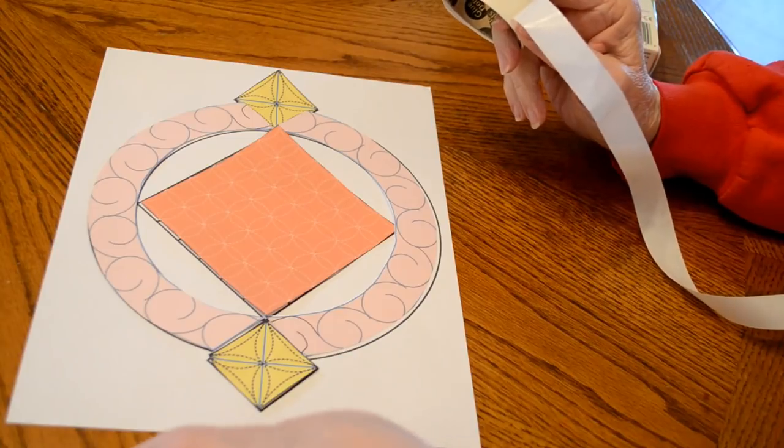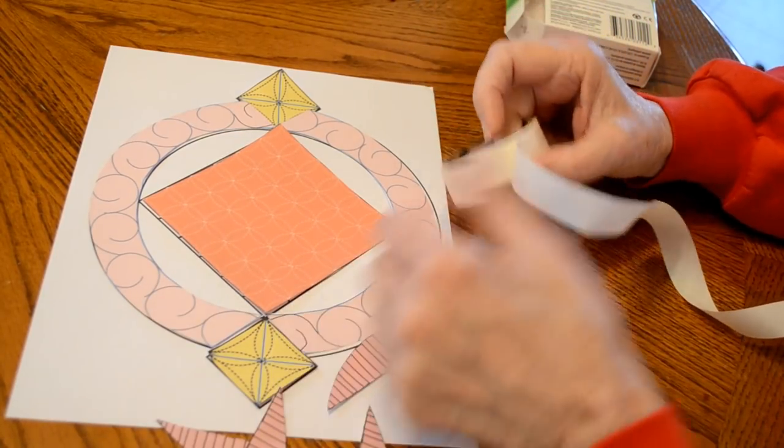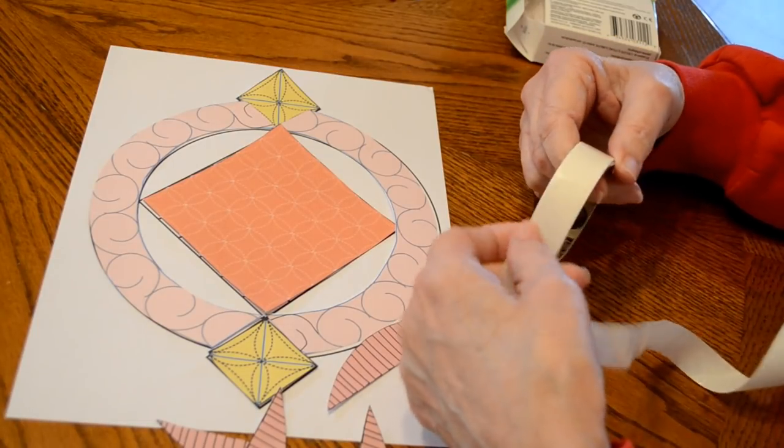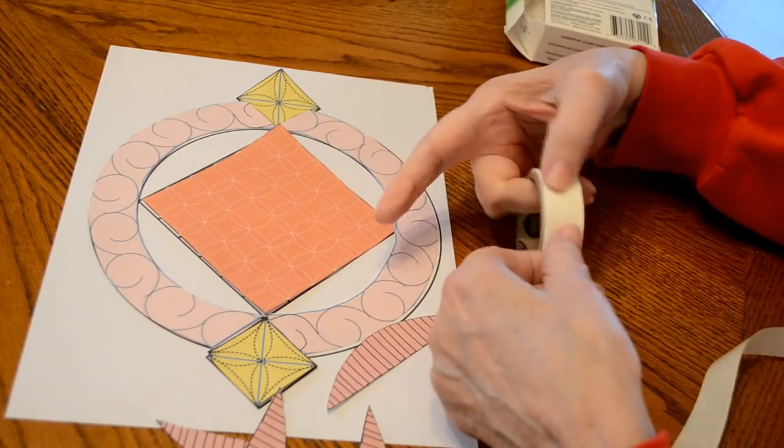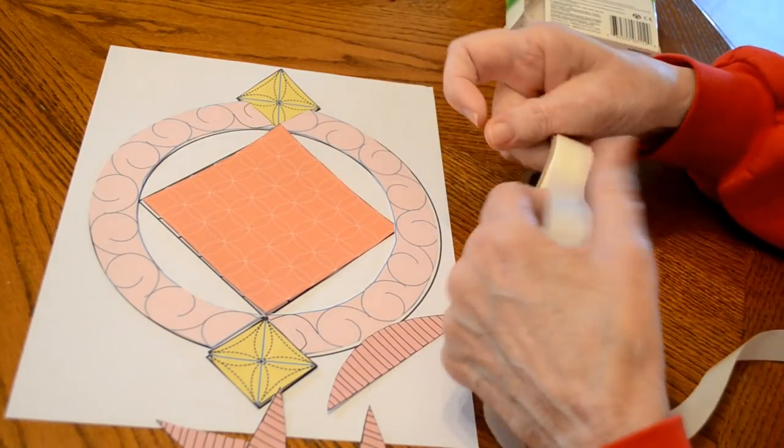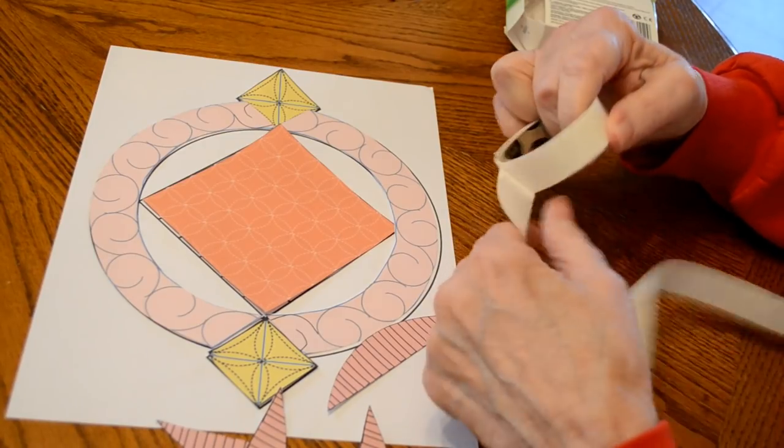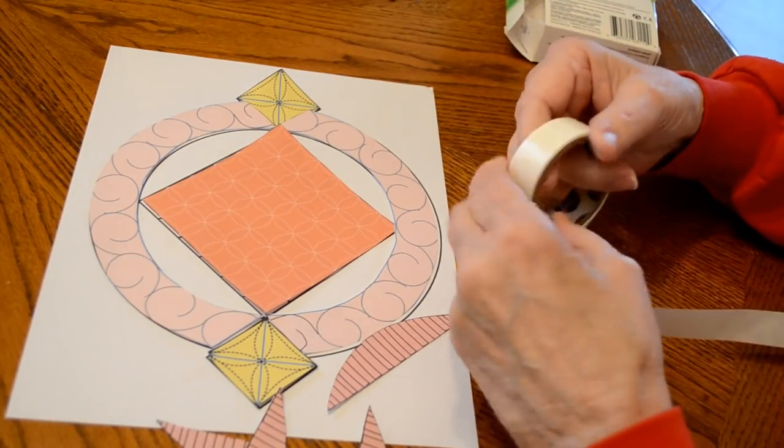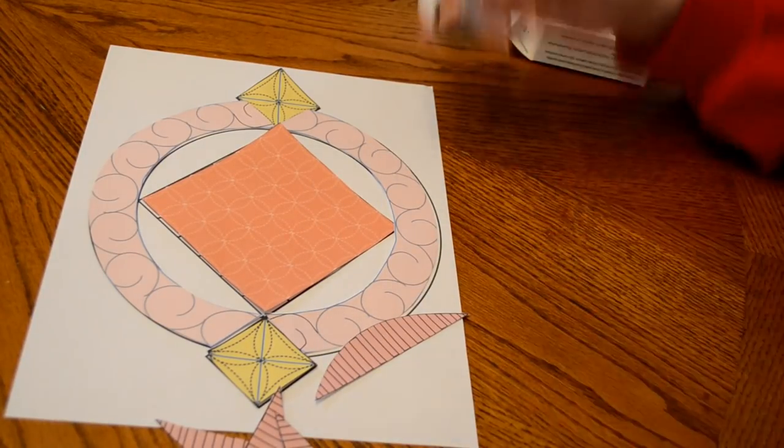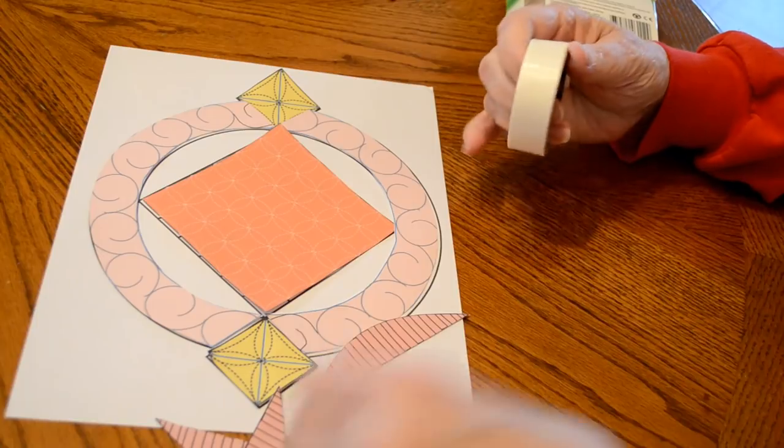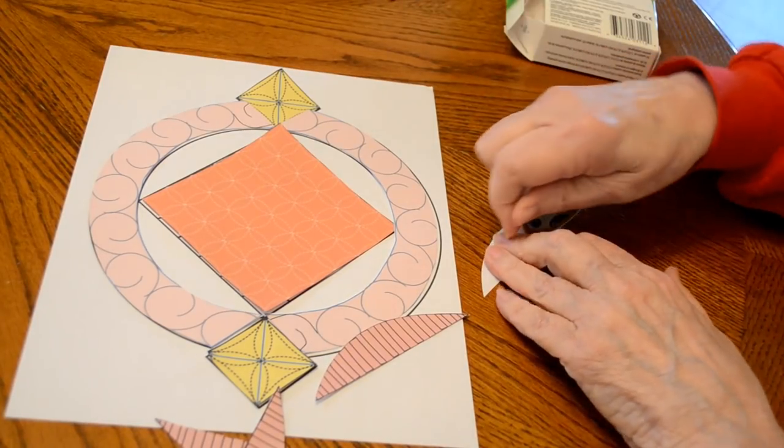Now I chose to use the straight lines that are the matchstick quilting because I have so many curves going on. I have the curves here and the curves here and I have curves here. It needs something to take away all the curves. So I thought maybe they would work to calm down the curviness a little bit.